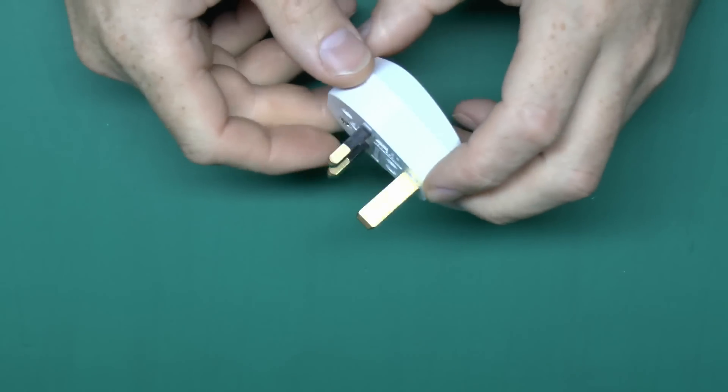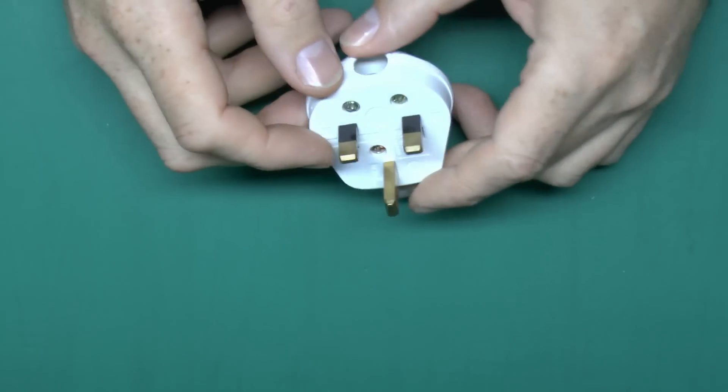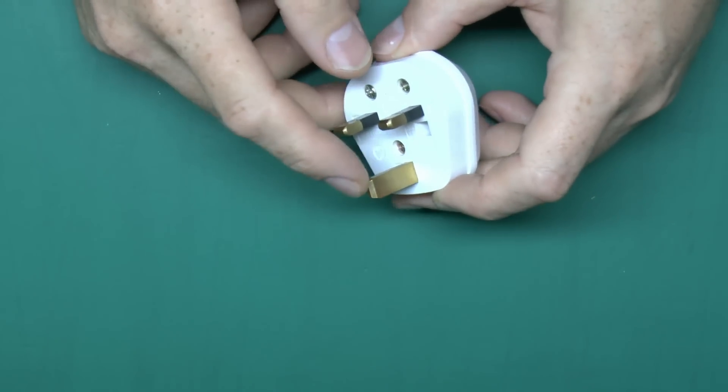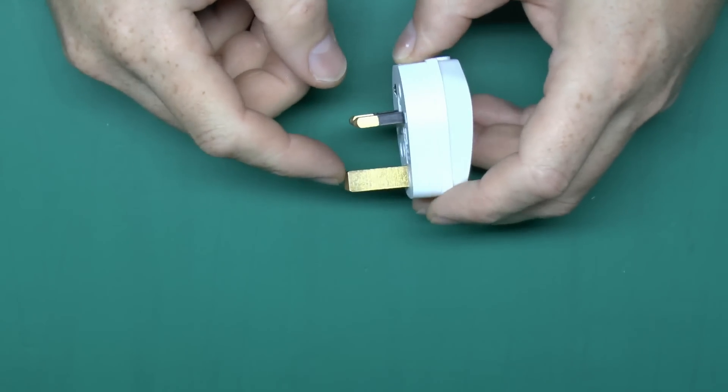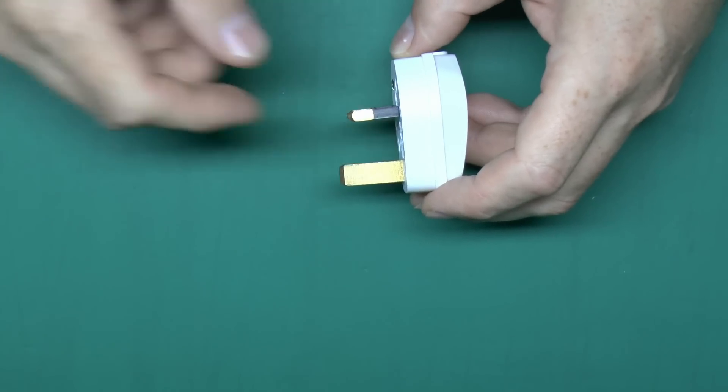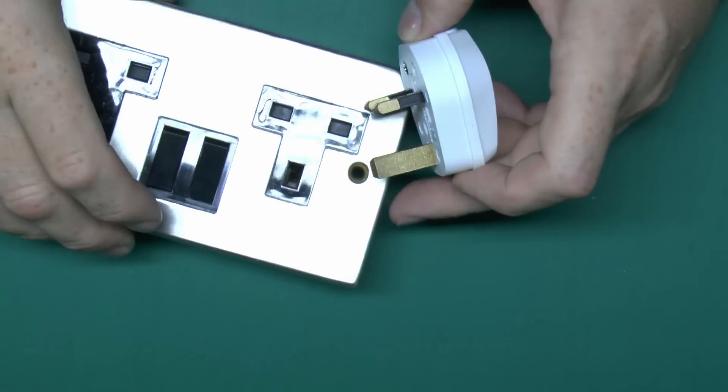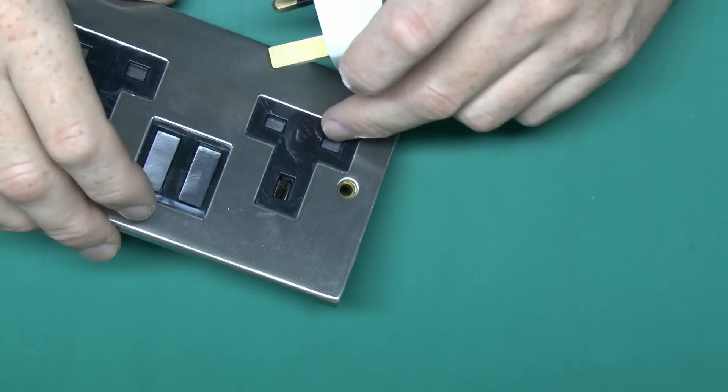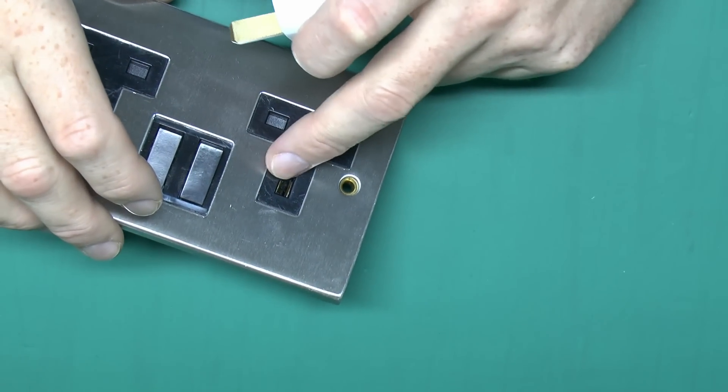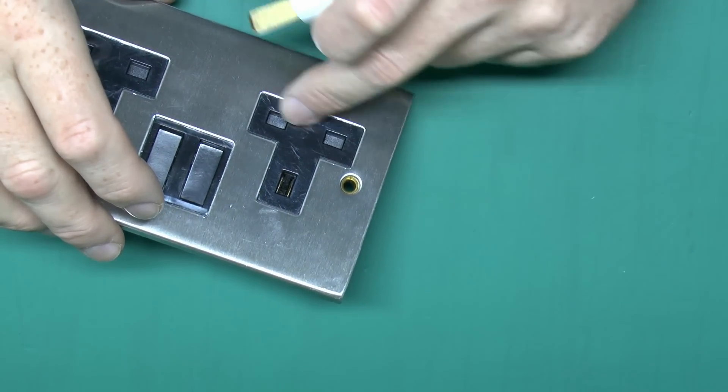Now here's the standard UK plug, and we've got the three pins there: line and neutral at the bottom and the earth pin at the top. The earth pin is longer so that it can open the shutters which are found on all UK sockets. Here's an example, you can see it's got the covers over there which inserting a pin here will cause those to open.